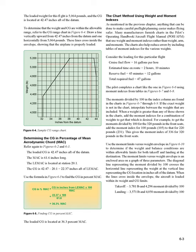Determining the CG and percentage of mean aerodynamic chord (MAC): referring again to Figures 6-2 and 6-3, the loaded CG is 42.47 inches aft of the datum. The MAC is 61.6 inches long, and the LEMAC is located at station 20.1. The CG is 42.47 minus 20.1 equals 22.37 inches aft of LEMAC. Using the formula in Figure 6-5, the loaded CG is located at 36.3 percent MAC.